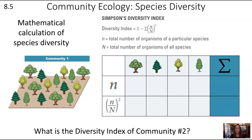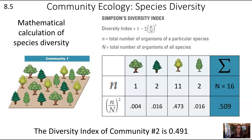Now let's calculate the diversity index of community number 2. We follow the same procedure: plug in little n, the number of each specific type of tree, divided by the total number of organisms across all species. For example, for the first type of tree, it's 1 over 16, squared. Summing all of those gives 0.509, and 1 minus 0.509 gives a diversity index of 0.491.